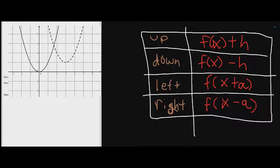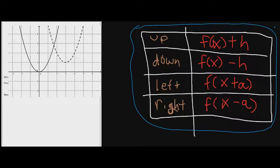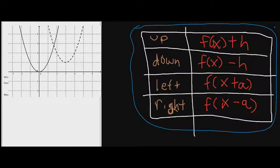As you can see from this little chart that I made over here in the right-hand corner, you'll notice that I have what happens when we go up, what happens when we go down, what happens when we go left, and when we go right. When we go up, we have f(x) plus h — the h is just a number on the outside. When we go down, we have f(x) minus h. When we go left, because we're affecting our input on the x-axis, it's going to be x plus a inside the parentheses. And if we go to the right, it's going to be x minus a.